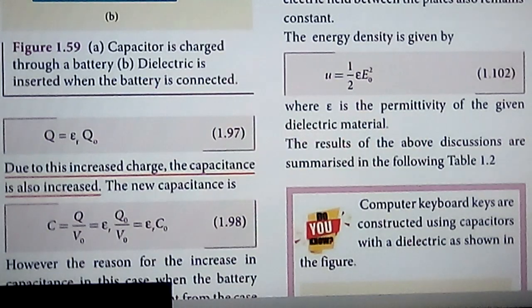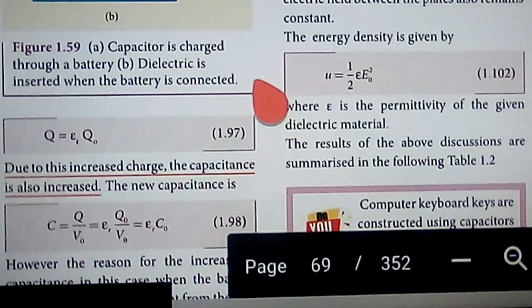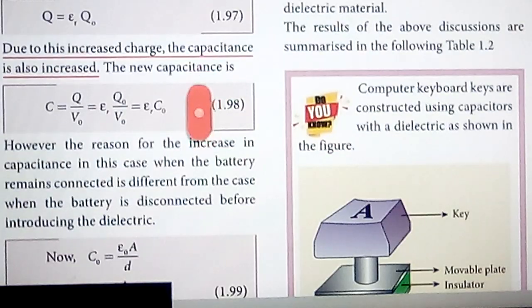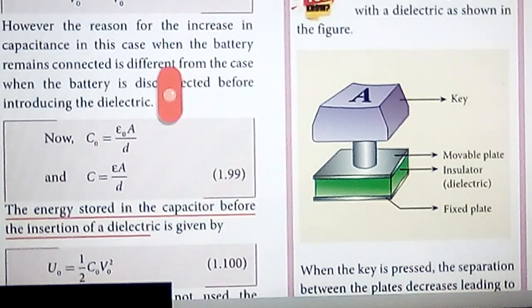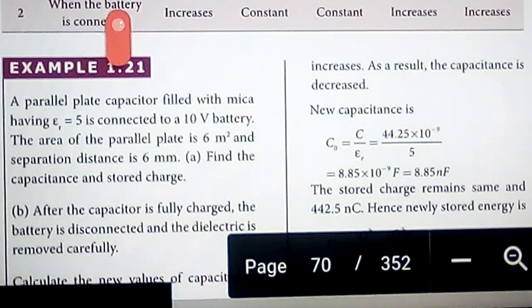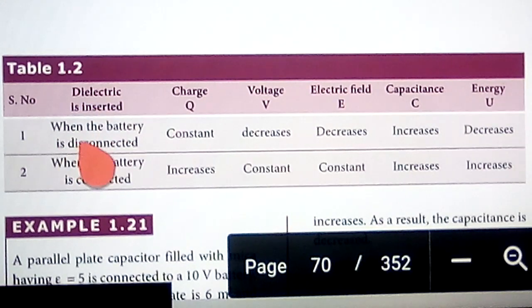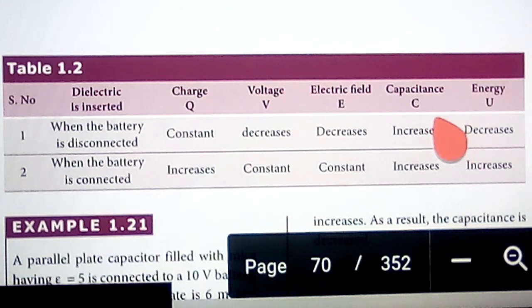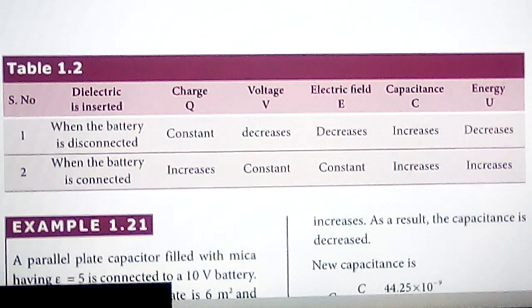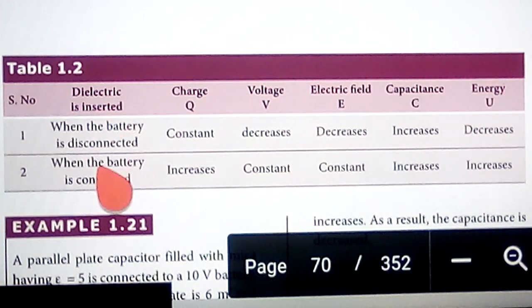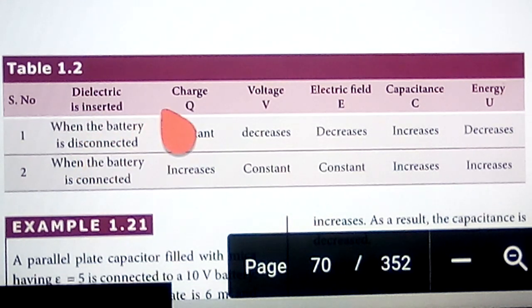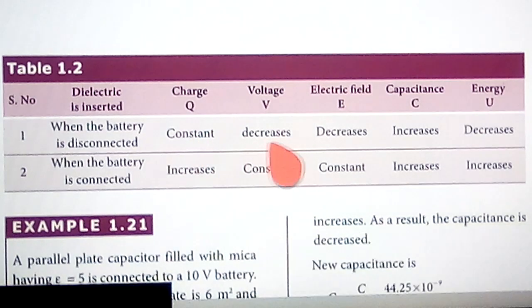The results of these two discussions are summarized in a tabular column comparing the cases when the battery is disconnected and when the battery is connected, for voltage, electric field, capacitance, and energy. In the first case when the battery is disconnected, charge q remains constant, voltage decreases, electric field decreases, capacitance increases, and energy decreases.